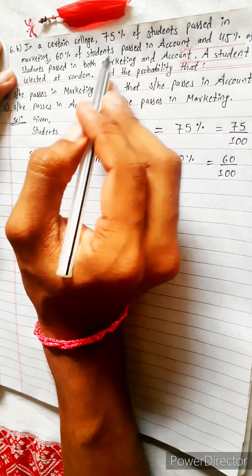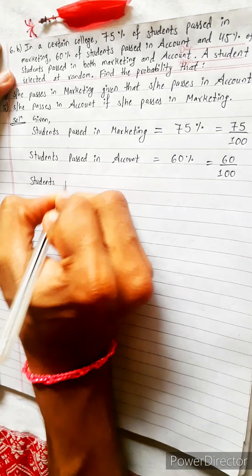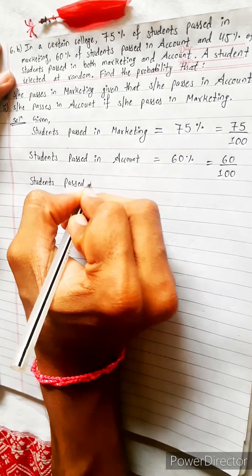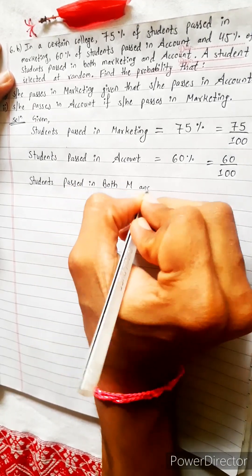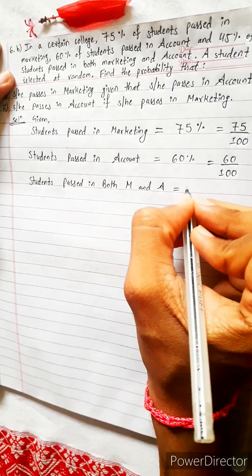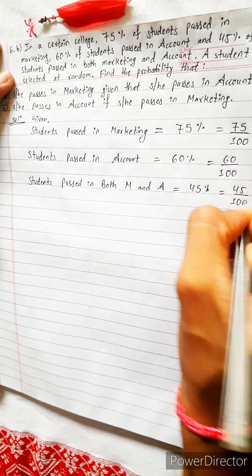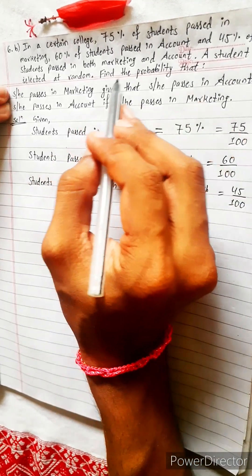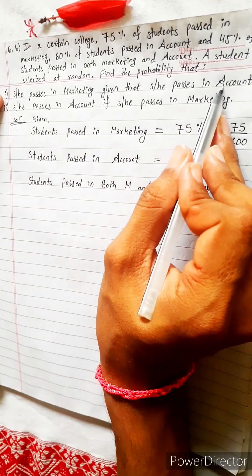45% passed in both. Students who passed in both marketing and account equals 45%, and 45% means 45 by 100. Now look, one student is selected. Find probability he passed in marketing given that he passed in account.